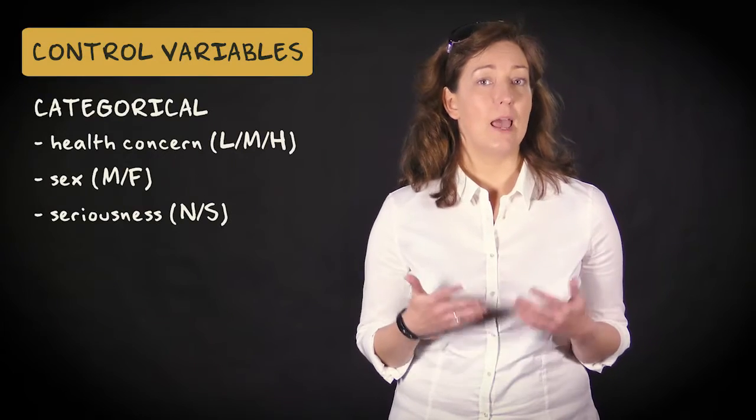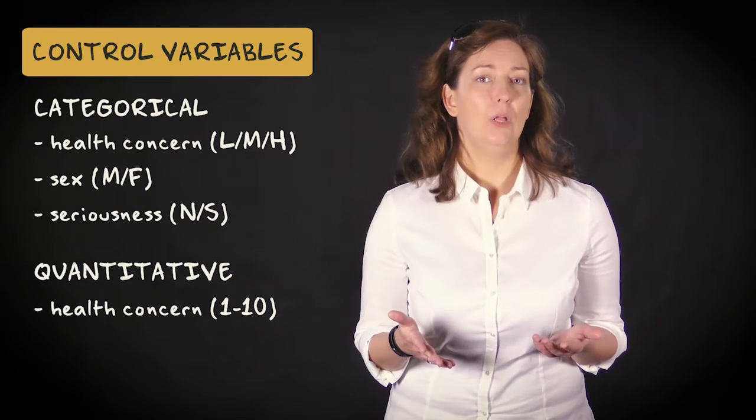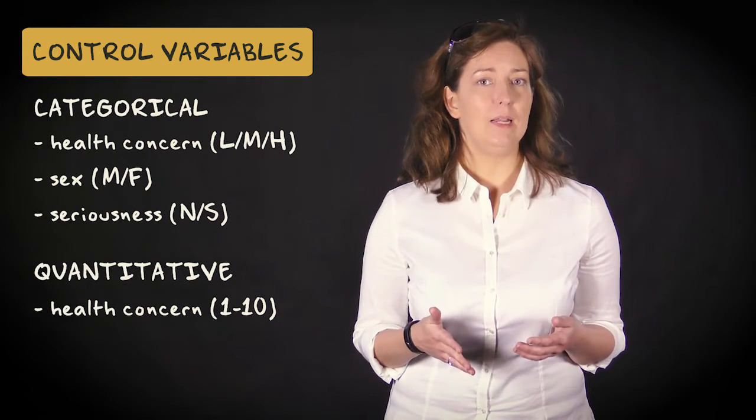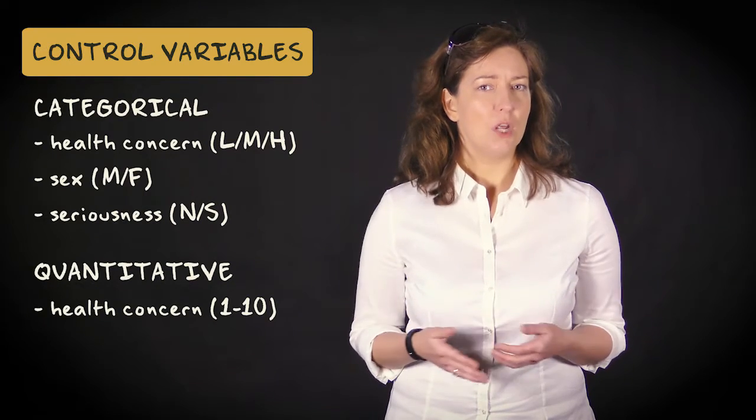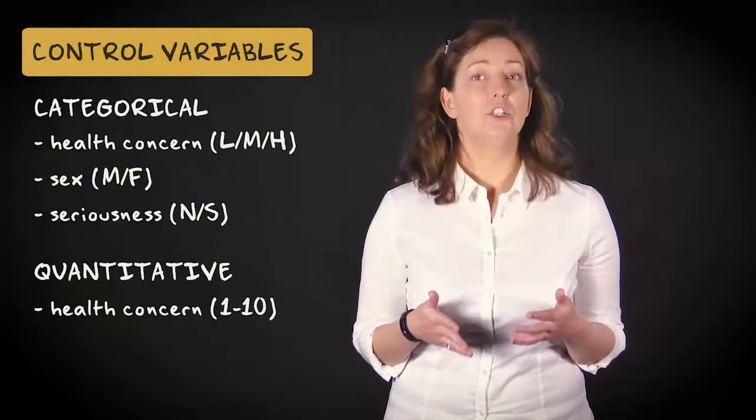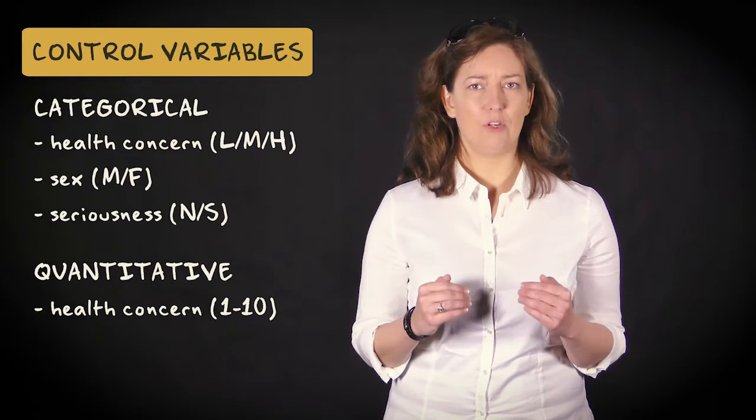Here, we've looked at categorical control variables, but control variables can also be quantitative. For example, we could have used a health concern rating between 1 and 10, measured using a questionnaire. Of course, with a quantitative control variable, it's no longer feasible to check the relation between the variables of interest at each individual value of the control variable.